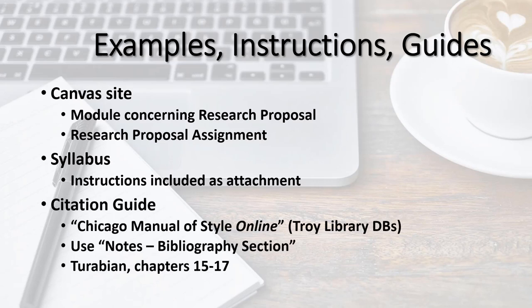Finally, let me direct you to guides that will help you format your bibliography. You can consult the Chicago Manual of Style Online, provided by the Troy Library and accessible from its list of databases — use the Notes-Bibliography section rather than the Author-Date section. You can find the same information in your textbook, Turabian's Manual for Writers, in Chapters 15, 16, and 17. Remember to use the Notes-Bibliographic form rather than the Author-Date form.